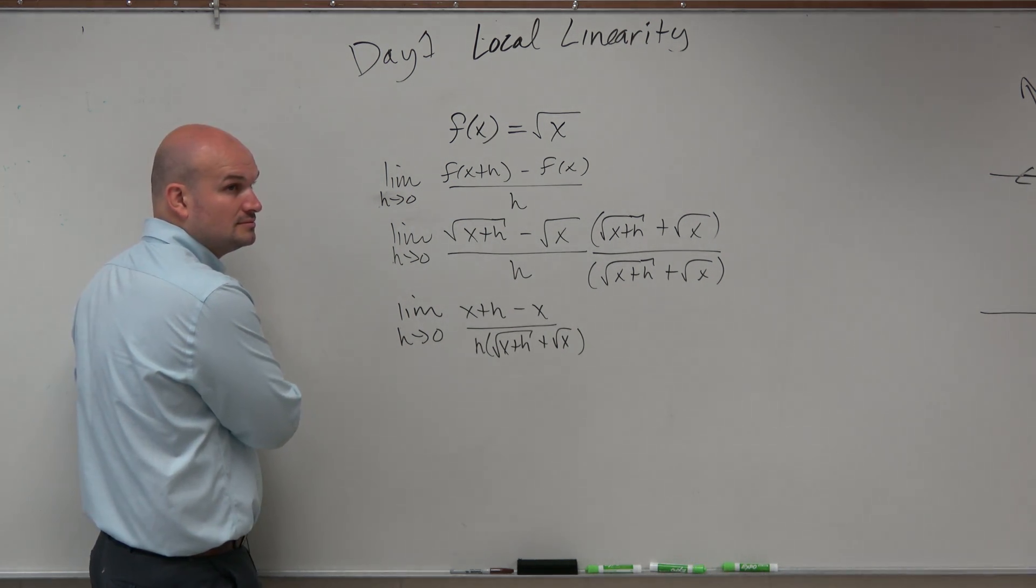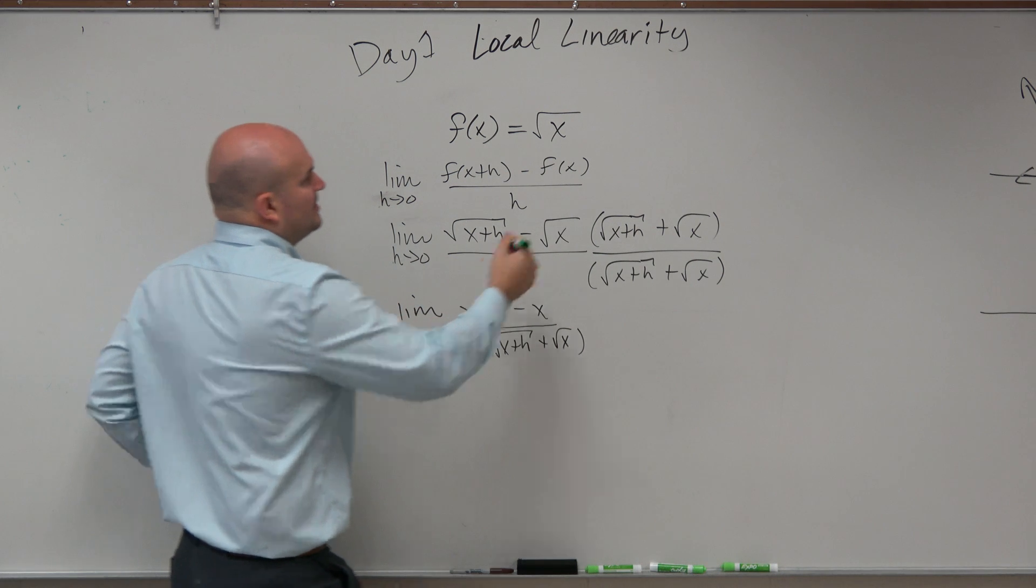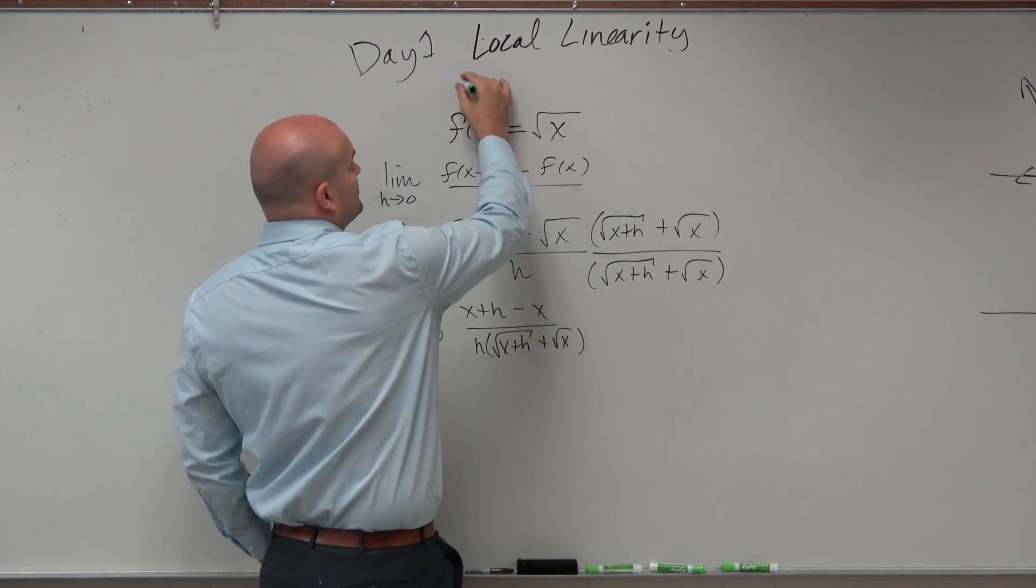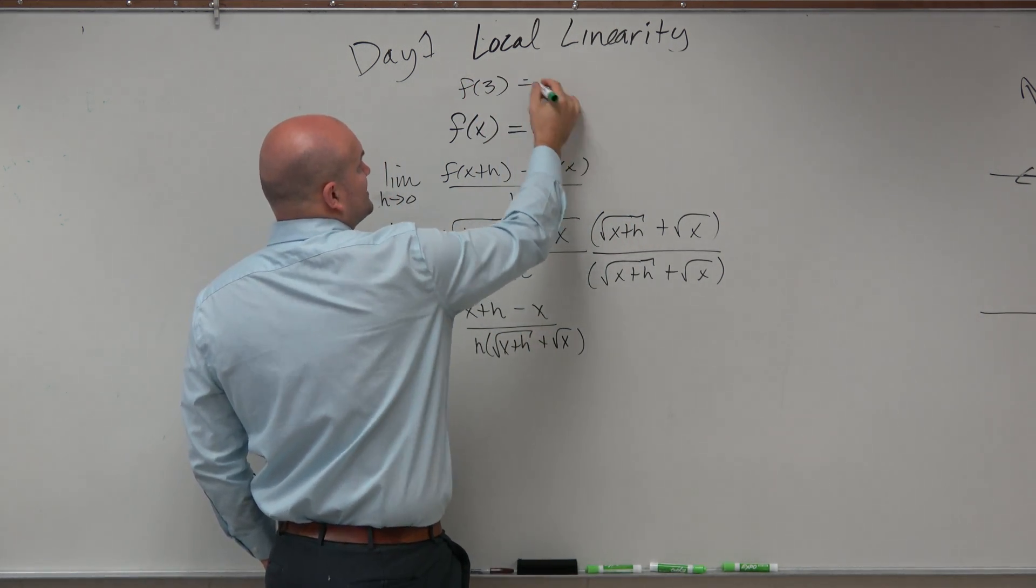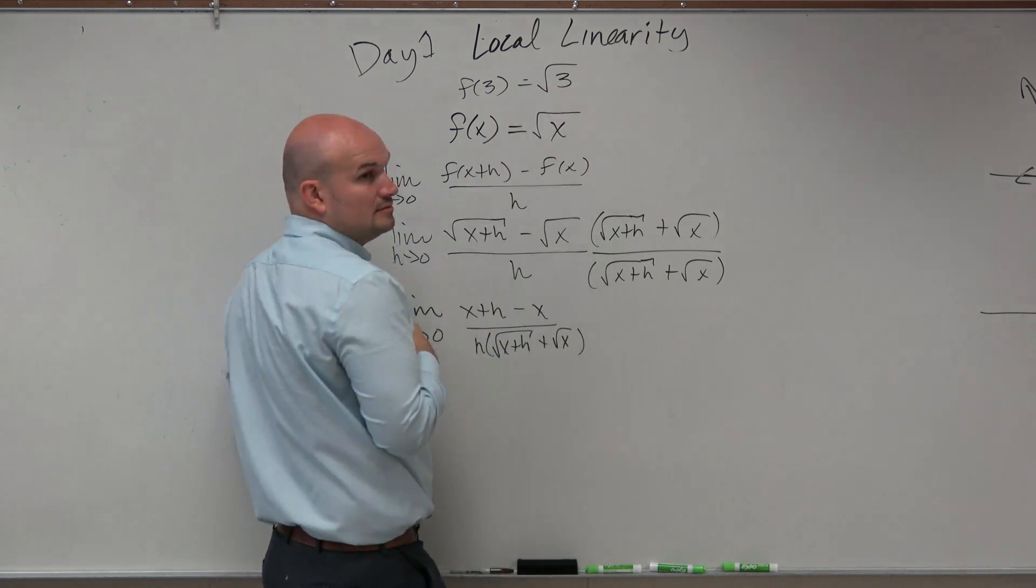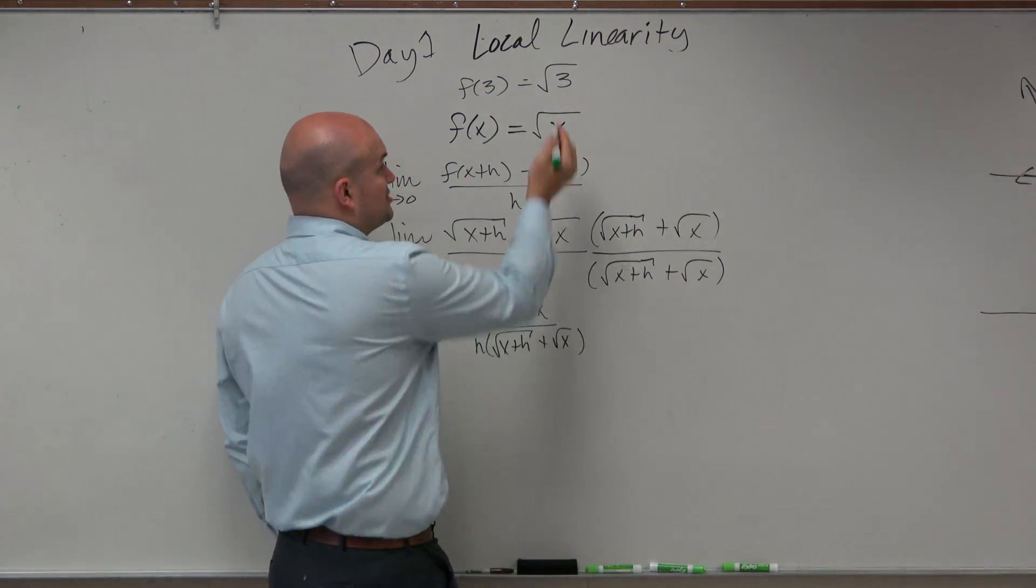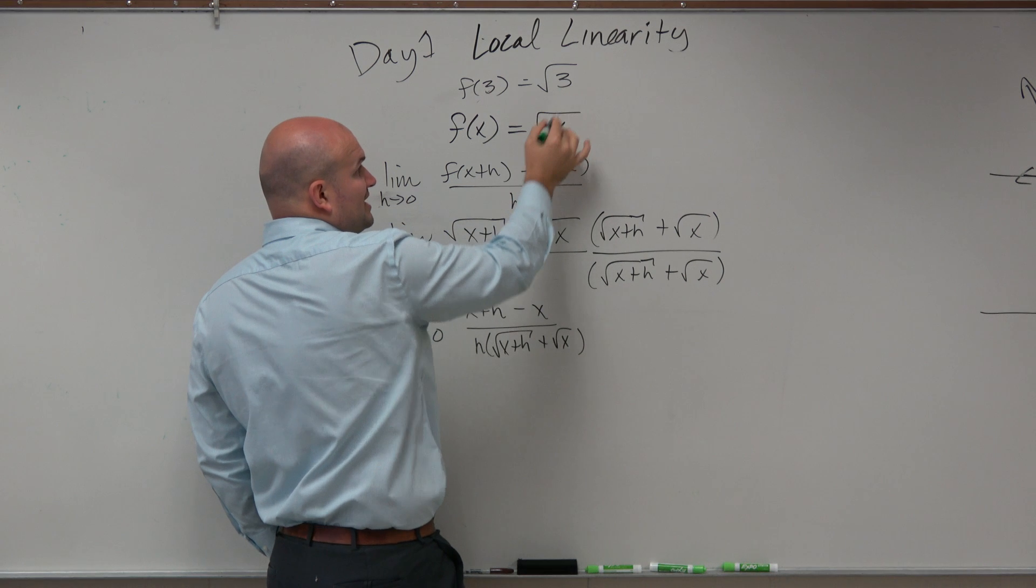Student: I don't understand why you put it in like that where you just put x plus h right under the radical. Teacher: OK. It's like the same thing. All right. Do this. f of 3. That's going to equal square root of 3, right? Whatever's inside there, you replace with your x. Correct?